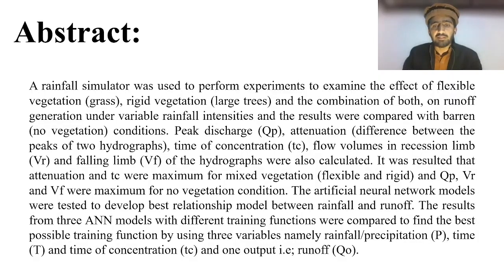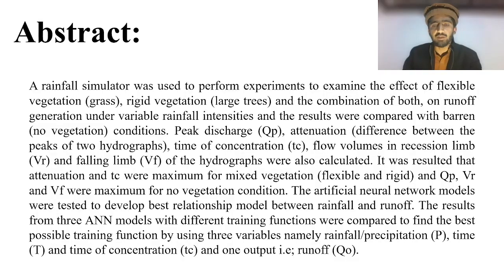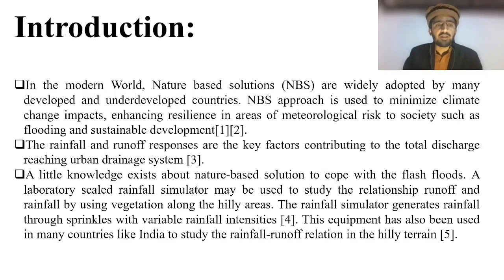Mixed vegetation means both flexible and rigid. Peak discharge QP, rising limb VR, and falling limb VF were maximum for no vegetation condition. Artificial neural network models were tested to develop the best relationship model between rainfall and runoff. Results from three ANN models with different training functions were compared using three input variables: precipitation, time, and time of concentration, and one output Q0 runoff.